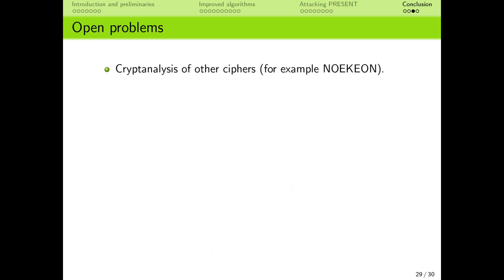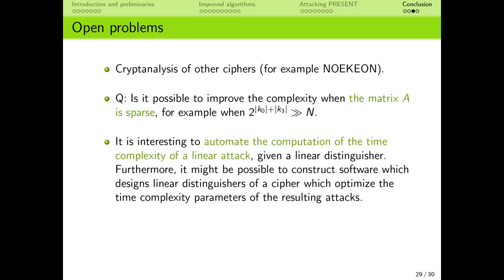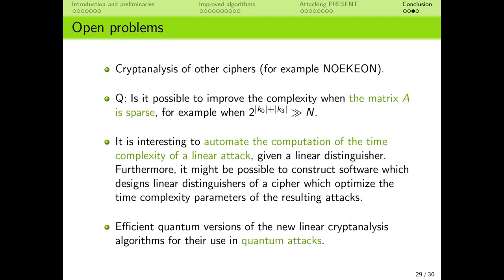However, there are still many avenues for improvement. First, we would like to apply the new algorithms to other ciphers — for example, we are currently working on attacks on reduced-round Noekeon. More theoretically, we would like to study the case in which the matrix A is very sparse, which happens when our key guesses cover more than half of the plaintext and ciphertext, and whether this can be used to speed up the Walsh transforms. We would also like to develop automatic tools which compute the cost of an efficient key recovery attack given a linear distinguisher of a block cipher. A more ambitious task would be to create software which finds optimal linear characteristics not just in terms of their linear properties, but also the cost of the key recovery. Finally, because the focus of our team is quantum cryptanalysis, we would like to explore the possibility of efficient implementations of linear attacks in the quantum setting.